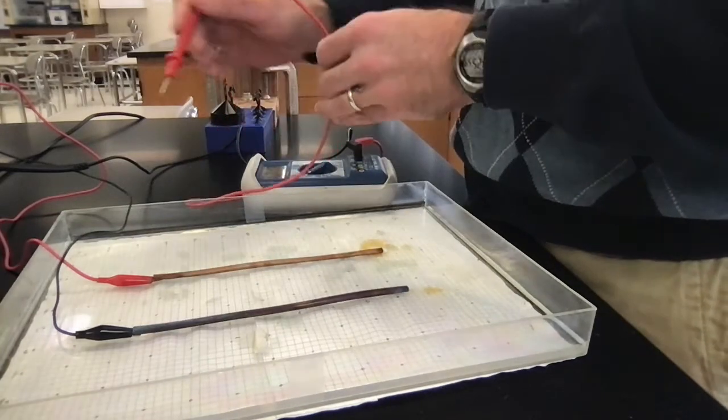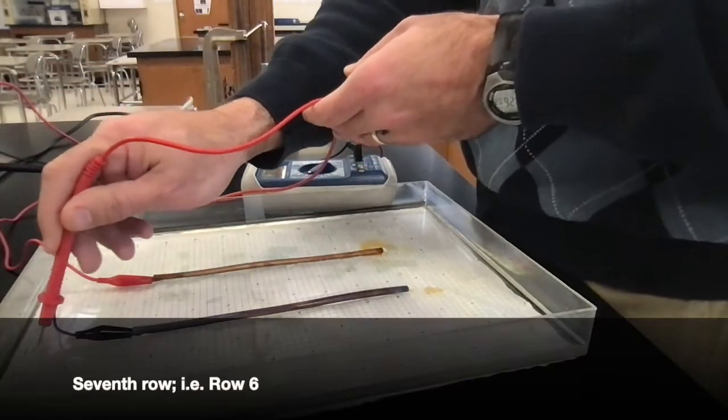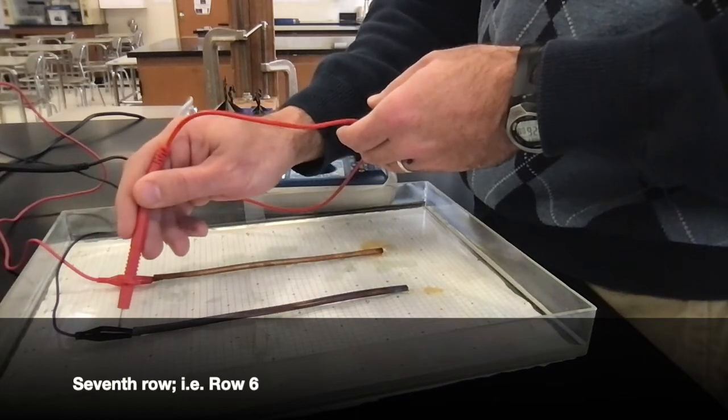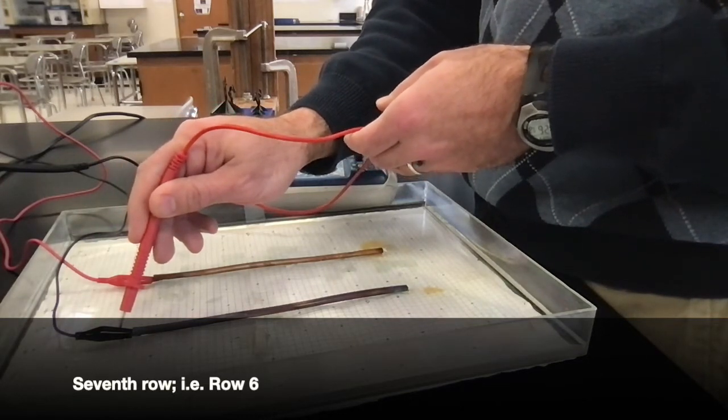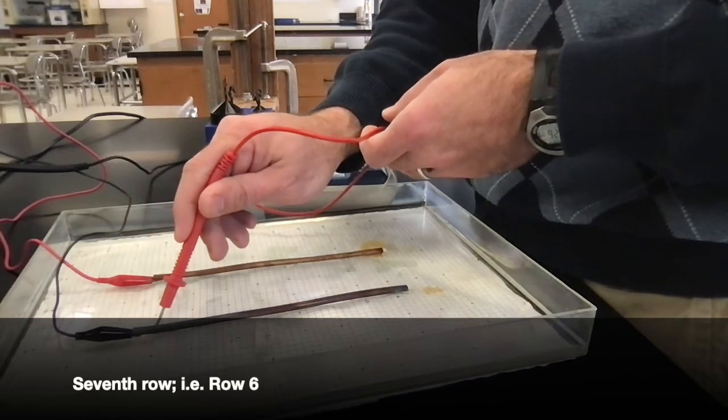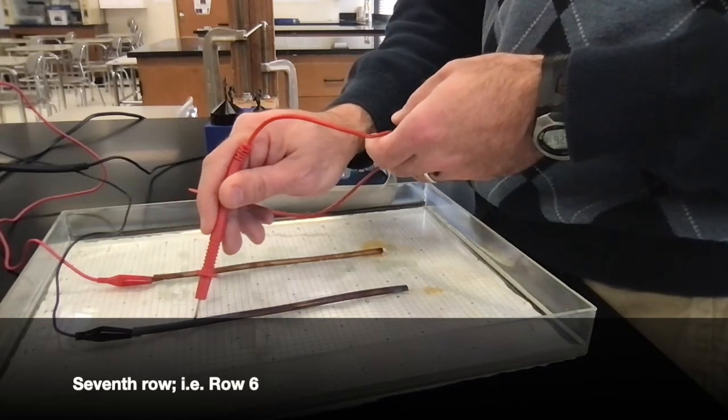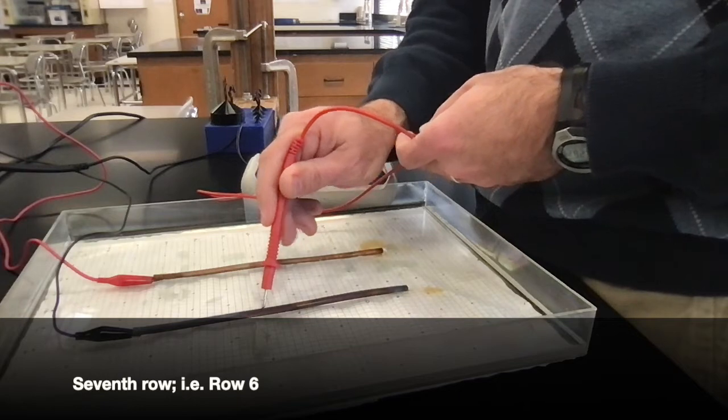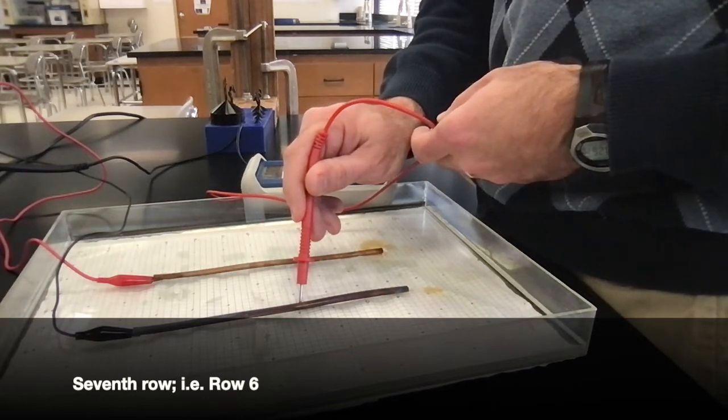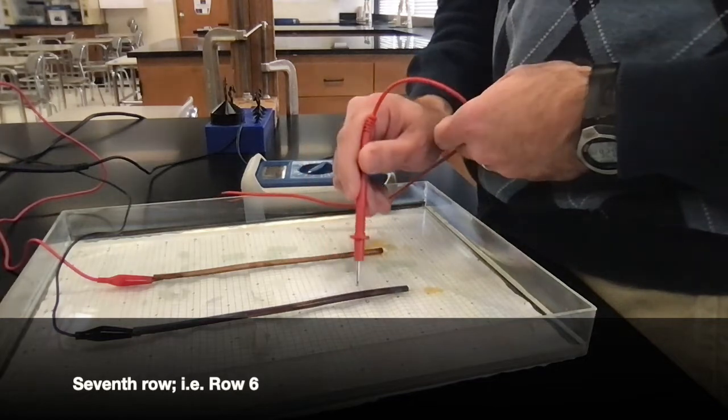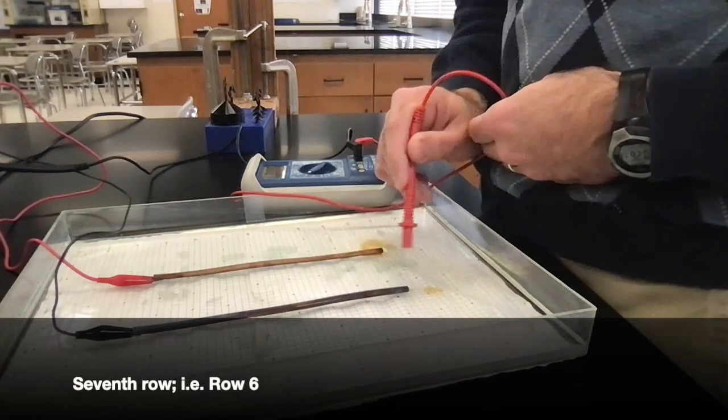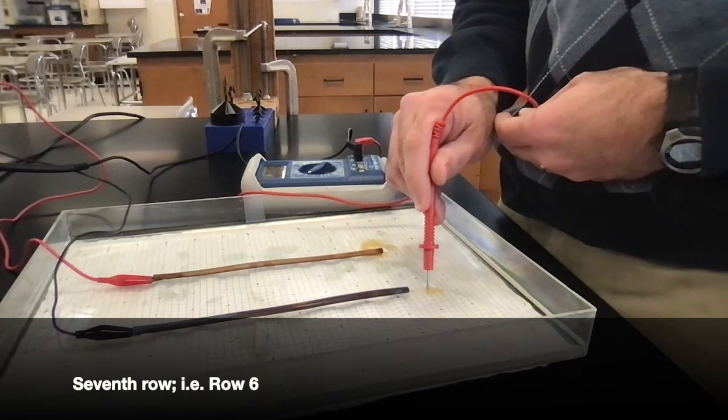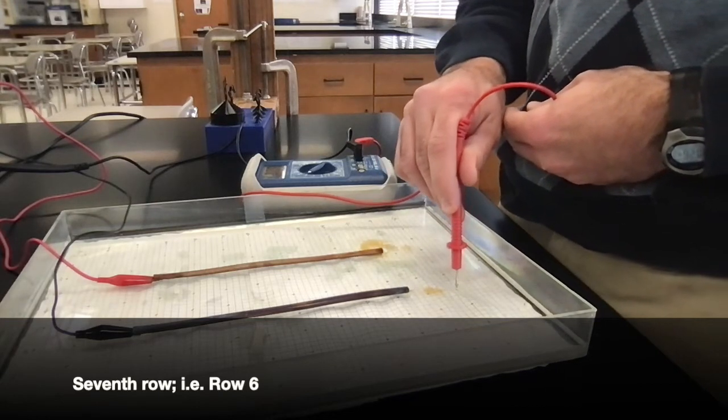Down to the seventh row, row labeled row 6. First column labeled 0 is 3.6, 1 is 3.3, 2 is 2.6, 3 is 1.2, 4 is 1.1, 5 is 0.9, 6 is 1.1, 7 is 0.9, 8 is 0.9, 9 is 0.9, 10 is 0.9, 11 is 2.7, 12 is 3.7.